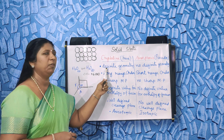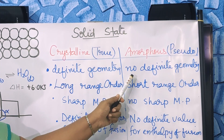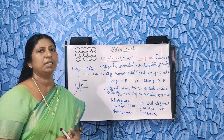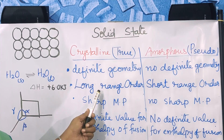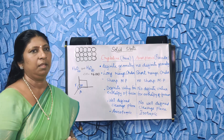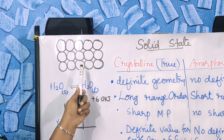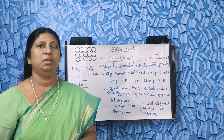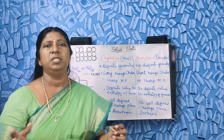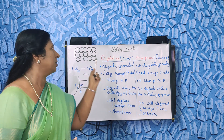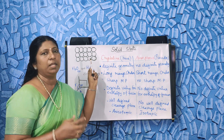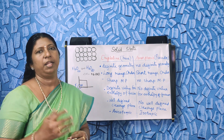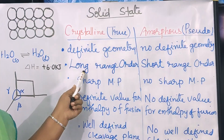The second difference is: crystalline substances have long range order. The particles are closely and regularly packed throughout a crystalline substance — this is a long range order.